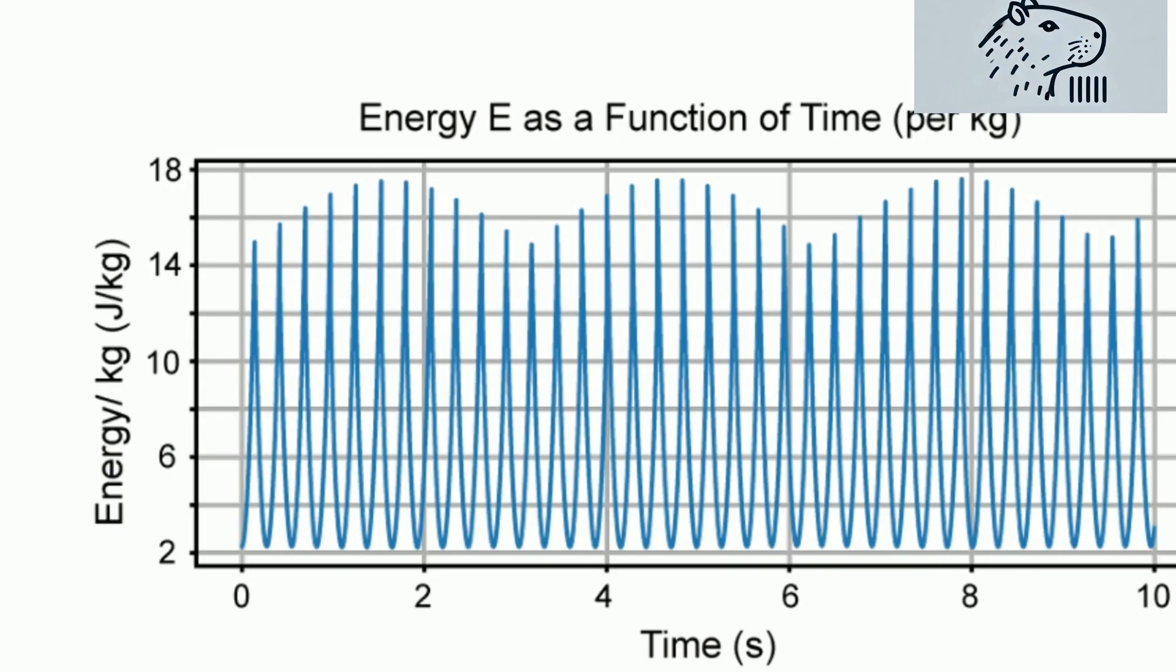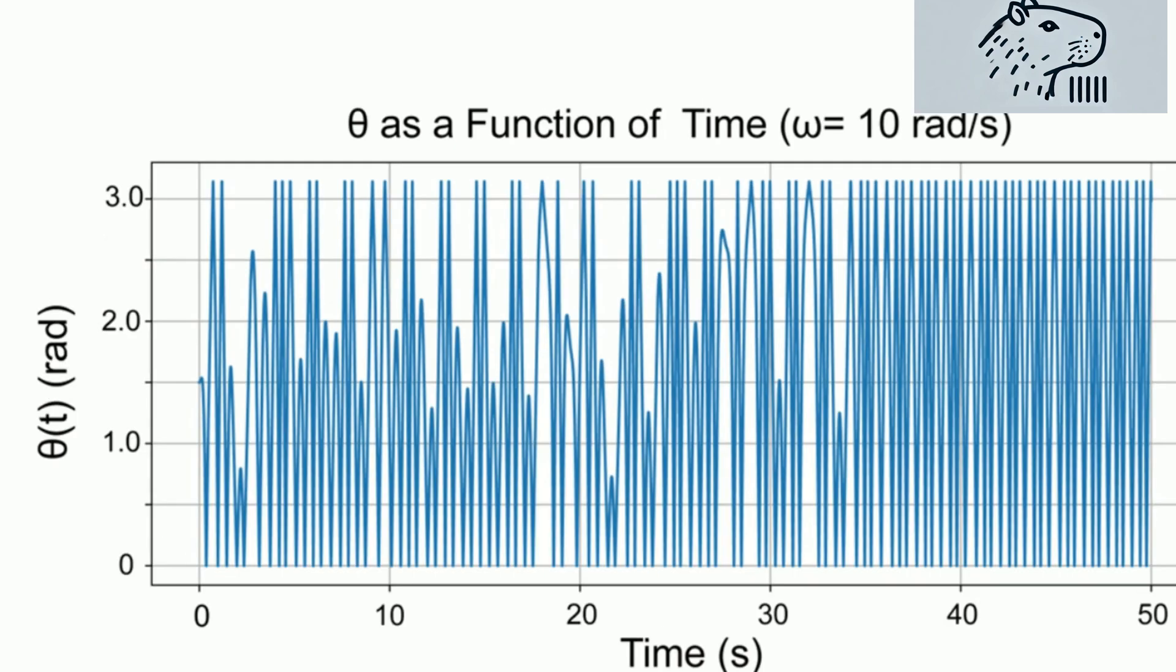As the pivot moves up and down, it transfers energy to the balls through the rope, leading to an increase in the amplitude of their oscillations.